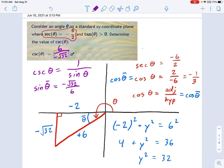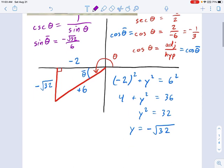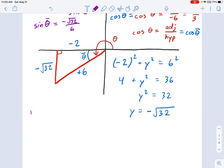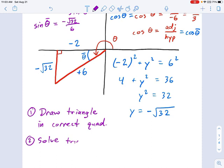As long as you go through the process, which, let me outline these steps just as a closer. Draw your triangle, and I mean your reference triangle, in the correct quadrant. Step 2, solve the triangle. And step 3, use that triangle to find the trig function that was asked for.